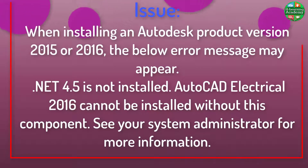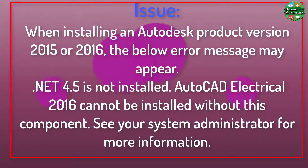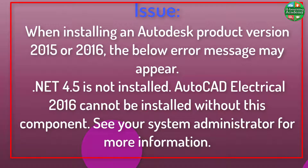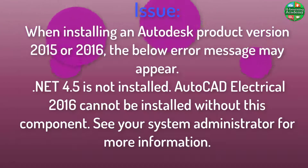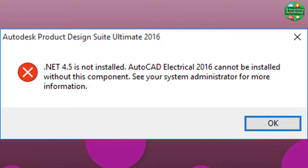Issue: When installing an Autodesk product version 2015 or 2016, the following error message may appear: '.NET 4.5 is not installed. AutoCAD Electrical 2016 cannot be installed without this component. See your system administrator for more information.'